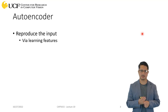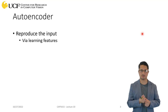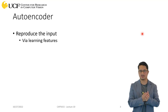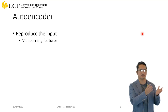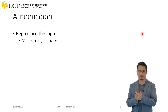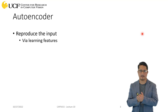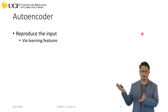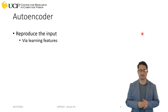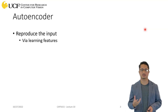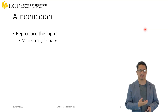Some key things to note: when you are learning those features, the size of those features should be pretty small compared to your input data. Otherwise, you could just copy all the pixel values if the input is an image, and since they're just copied, you can do reconstruction as well. But those are not good features. What you want is features in a compressed format where the number of values is far less than your input dimensionality.